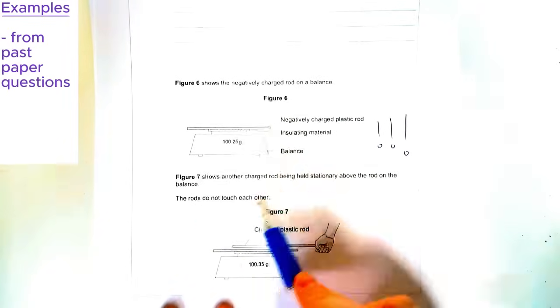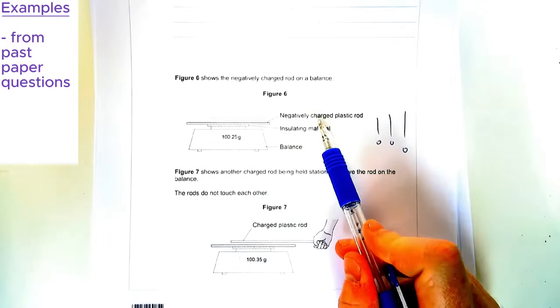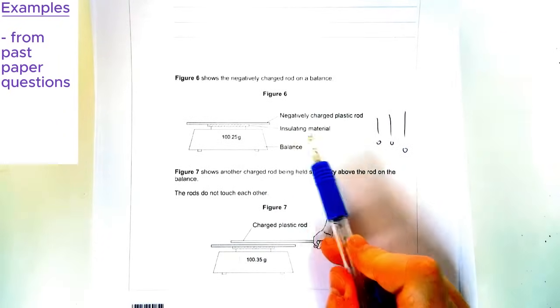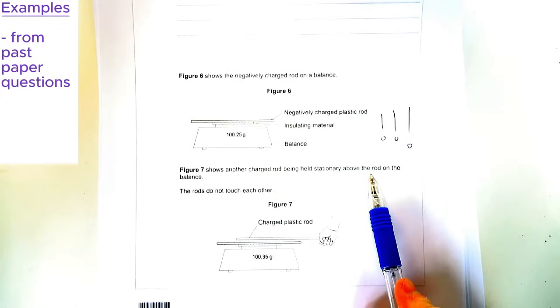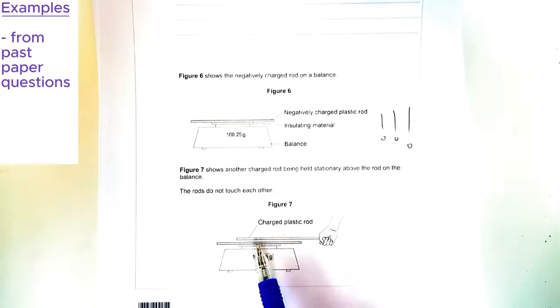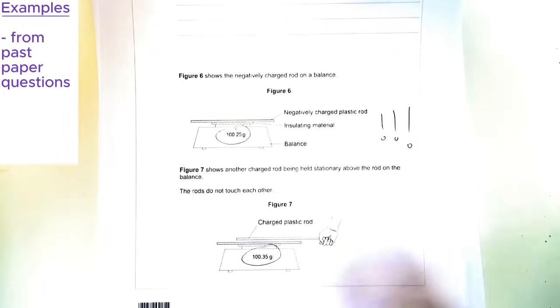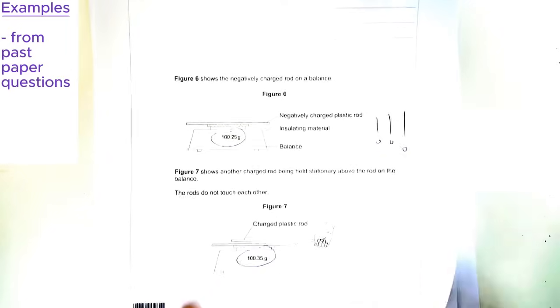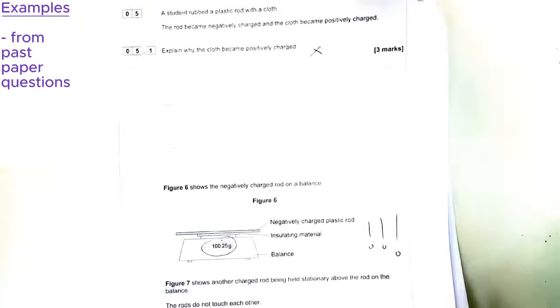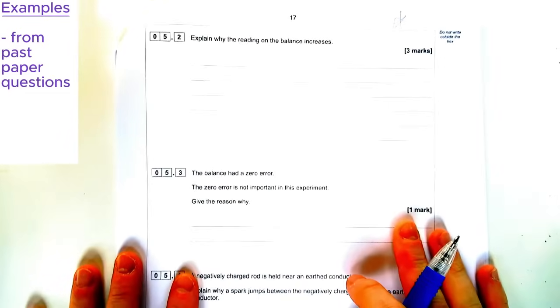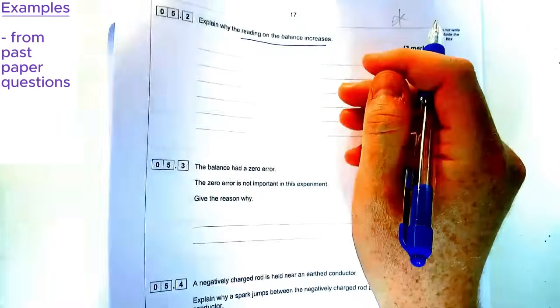So we've got a balance, and we've got a negatively charged plastic rod. Now, it says there's insulated material here, and then it says there's another charged rod being held stationary above that rod on the balance. They do not touch each other, so there's a gap between them. Now, what we notice is that the mass goes up a little bit, not by much, but by about 0.1 grams. And the question on the other side says, essentially, why does that happen. Now, this question was pretty poorly answered in the GCSE. I'll explain how we can answer a question like that. So what we know then, and your clue is in the question, it says why does the reading on the balance increase, is because it tells you that there's a charged rod above it, and it tells you this has negative charge on it.